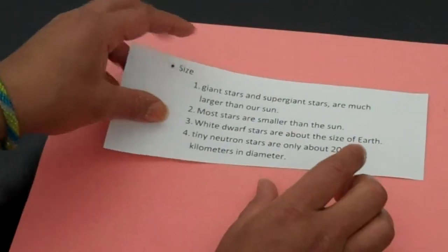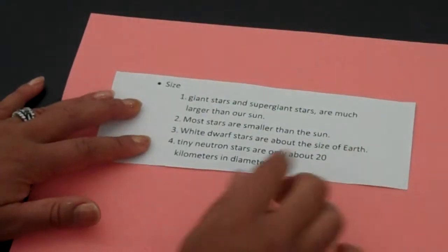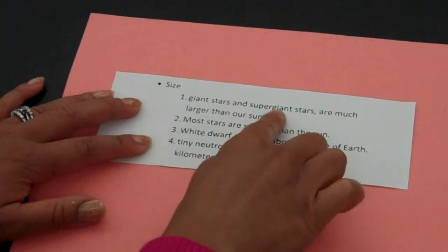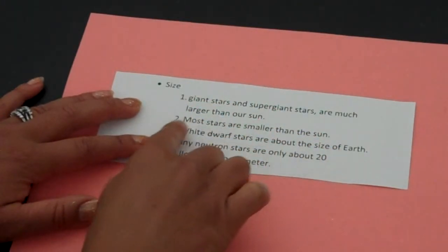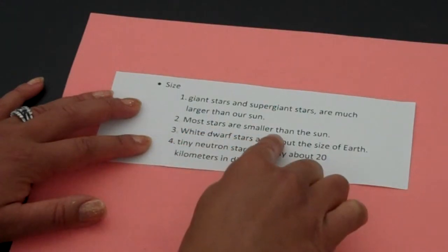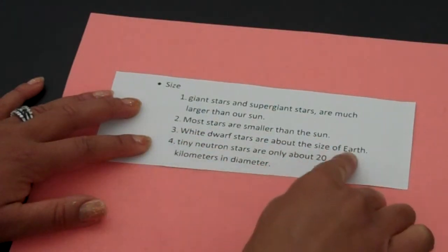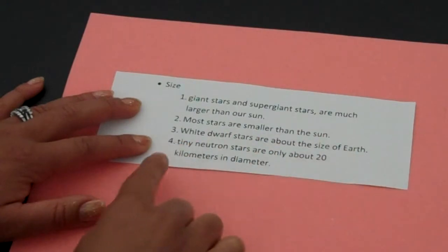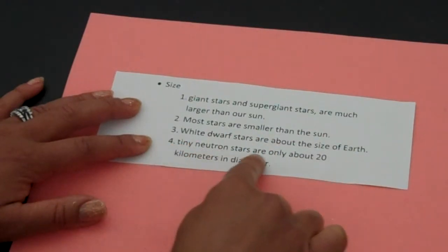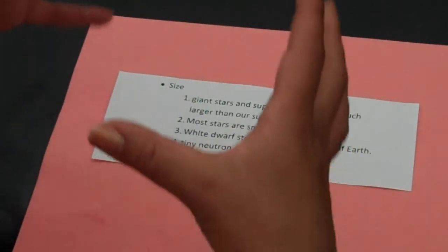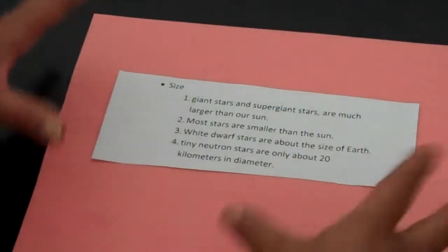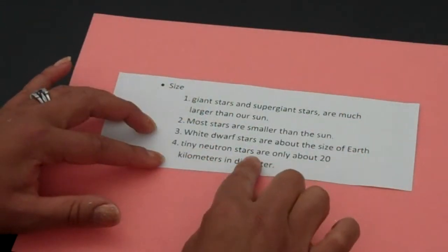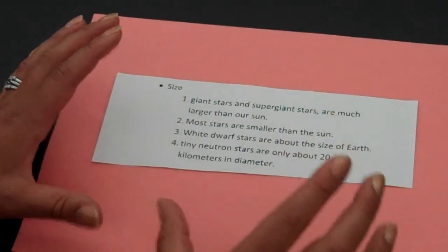Another characteristic is size. There are different size stars — they can come as giant or supergiant, and those are very much larger than our sun. Most stars are actually smaller than our sun. White dwarfs are about the same size as Earth, and tiny neutron stars are only about 20 kilometers in diameter. These stars are very tiny but very packed full of energy.